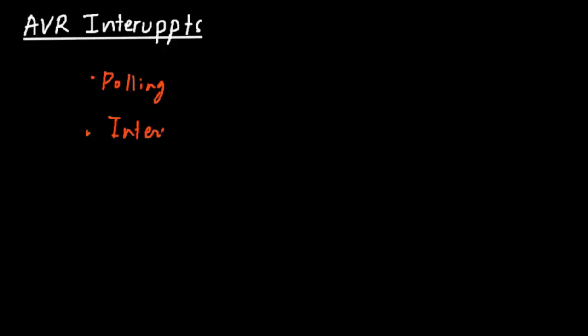Now before we speak about the actual interrupts in AVR, there is also one more thing: if more than two devices ask for a request — 'hey CPU, we want your attention' — what does the CPU do in that case? The CPU looks at its priority. There is something called interrupt priority.